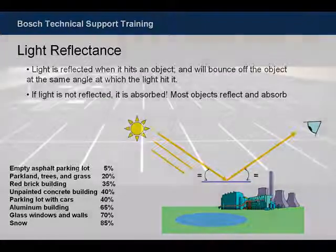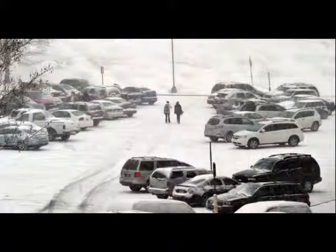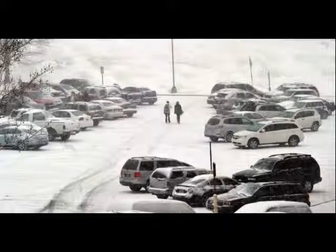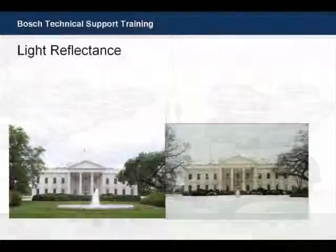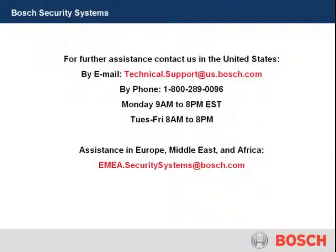If we look at an asphalt parking lot, it reflects very little light. But if we look at that same parking lot covered in snow, will your camera compensate for both conditions? Is the video produced after color compensation acceptable? Does it fit within the specifications set forth for the installation? This concludes this module. Thank you.